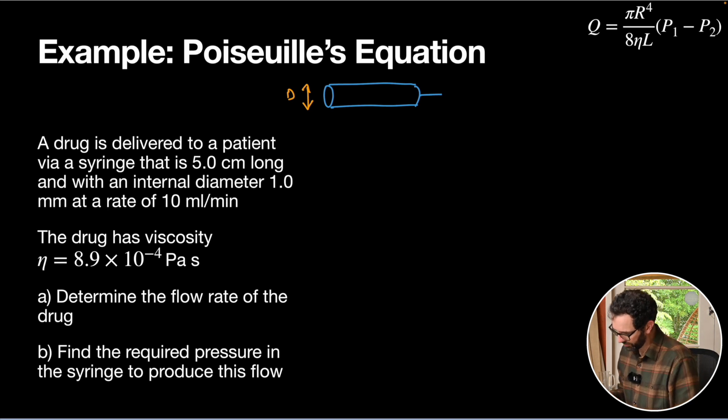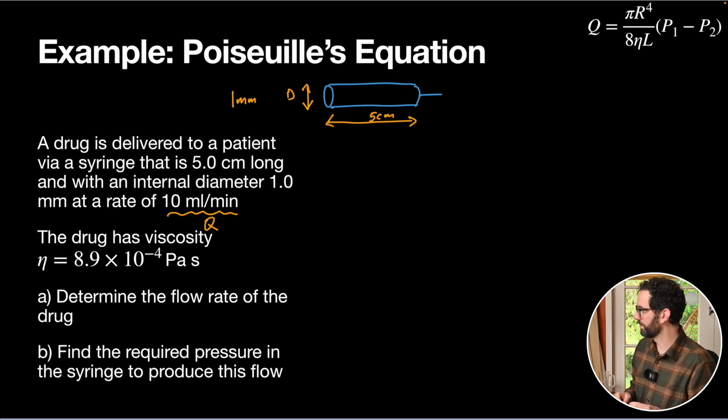We're not worrying about the needle bit, we're just worrying about the syringe part of it. The internal diameter, so we've got a little spanner thrown in the works here, that is our diameter, D. That's one millimeter. We've got five centimeters along here. And we have been given a flow rate of 10 mils per minute. So this is Q, but just expressed in a strange unit.